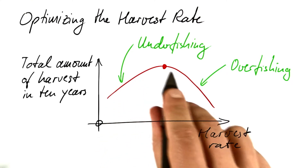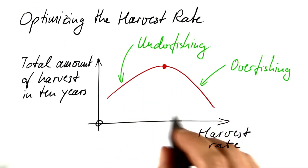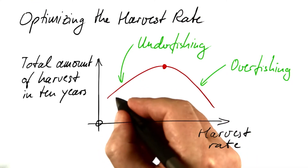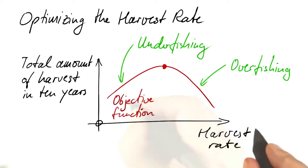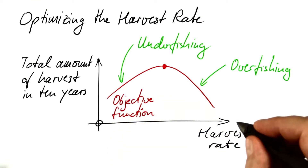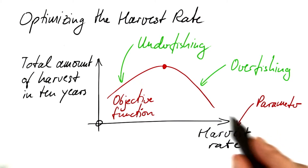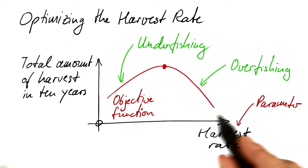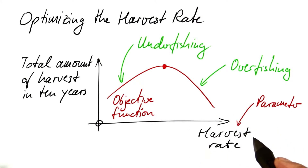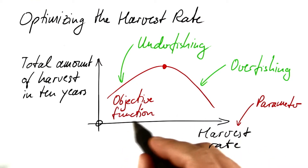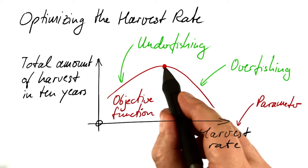In technical terms, the function that we are optimizing is called the objective function, and the harvest rate is a parameter it depends on. The optimization should find the best value of that harvest rate, meaning the value for which the objective function is maximum.